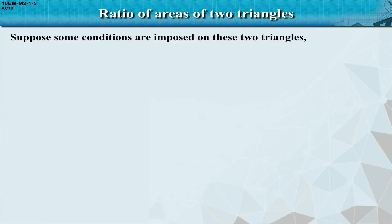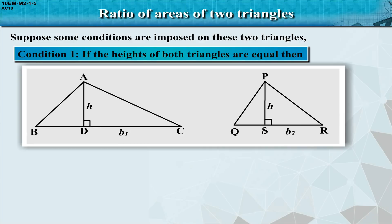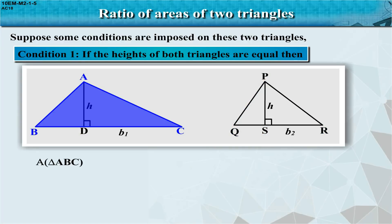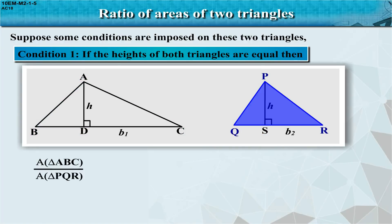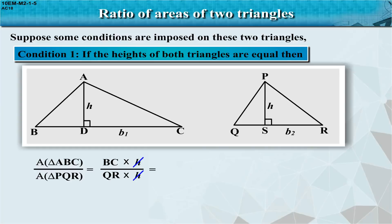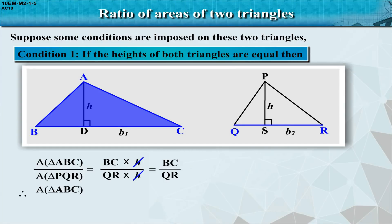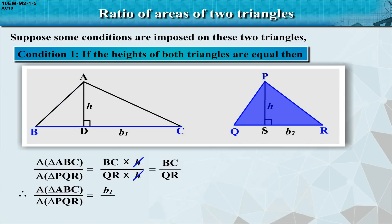Suppose some conditions are imposed on these two triangles. Condition 1: if the heights of both triangles are equal, then area of triangle ABC / area of triangle PQR = (BC × h) / (QR × h) = BC / QR. Therefore, area of triangle ABC / area of triangle PQR = b1 / b2. If heights are equal, the ratio of areas equals the ratio of their bases.